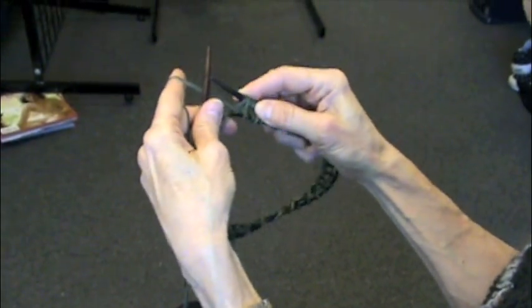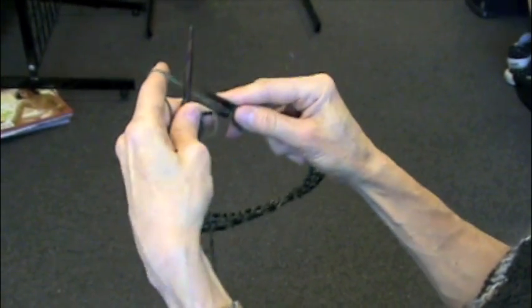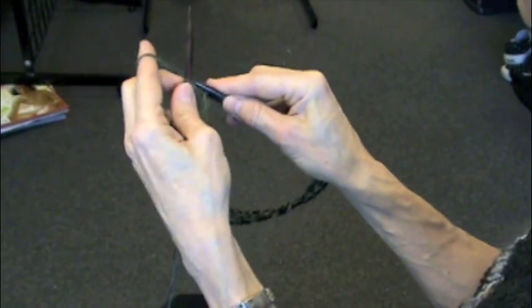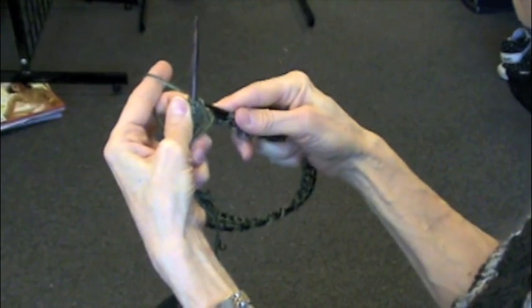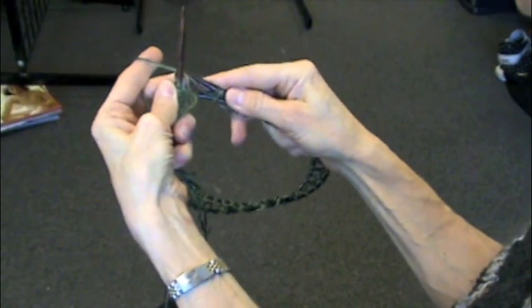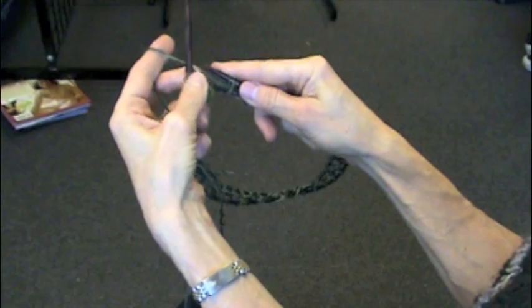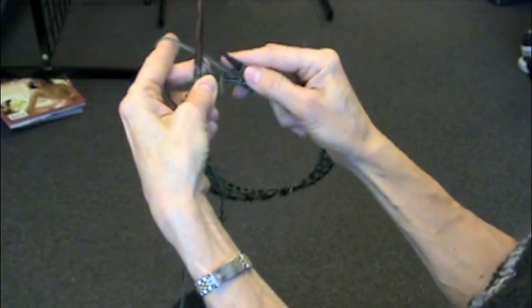In order to join, what I need to do is start knitting into the stitches. I'll pull the stitch that has the leg of the stitch facing you.